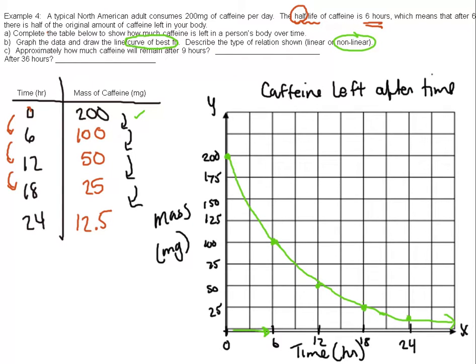But we can do the same thing. We can do the interpolation and extrapolation because we want to know approximately how much caffeine will remain after nine hours. Mine is right here. Let's draw up and over. I get 75 milligrams.